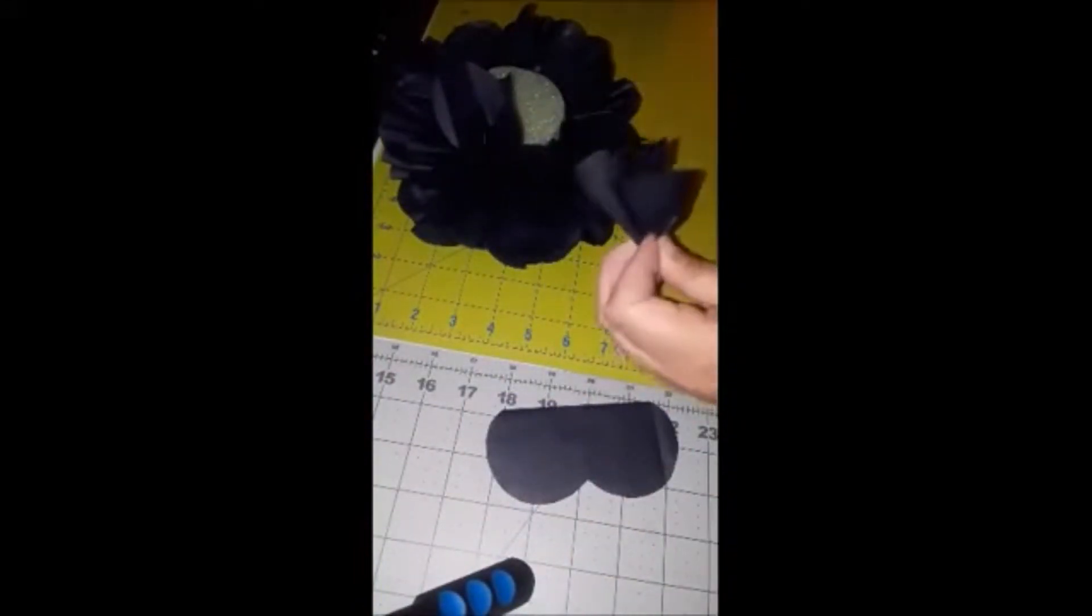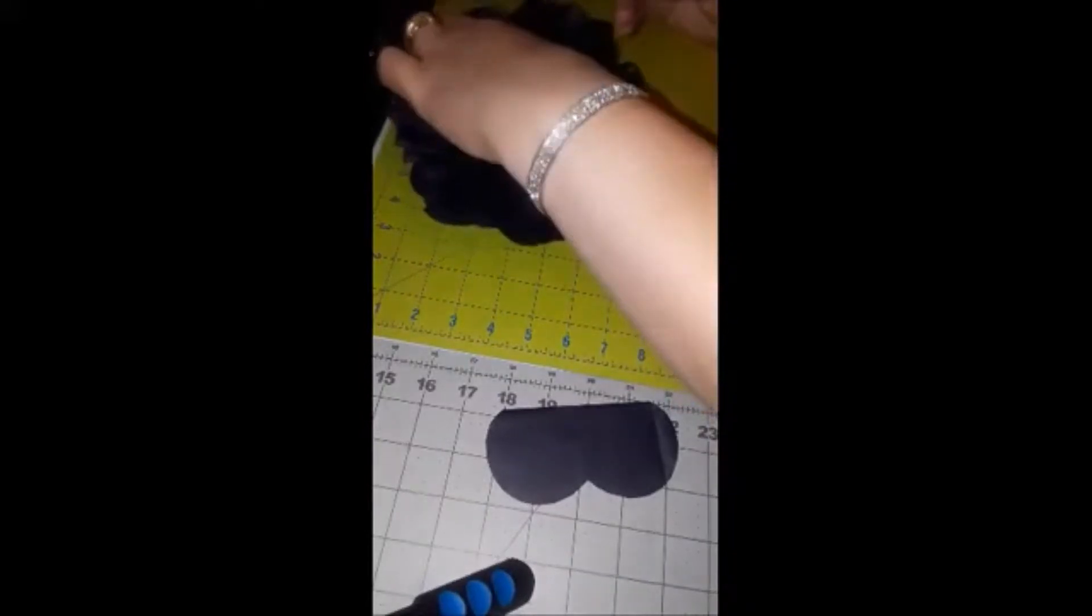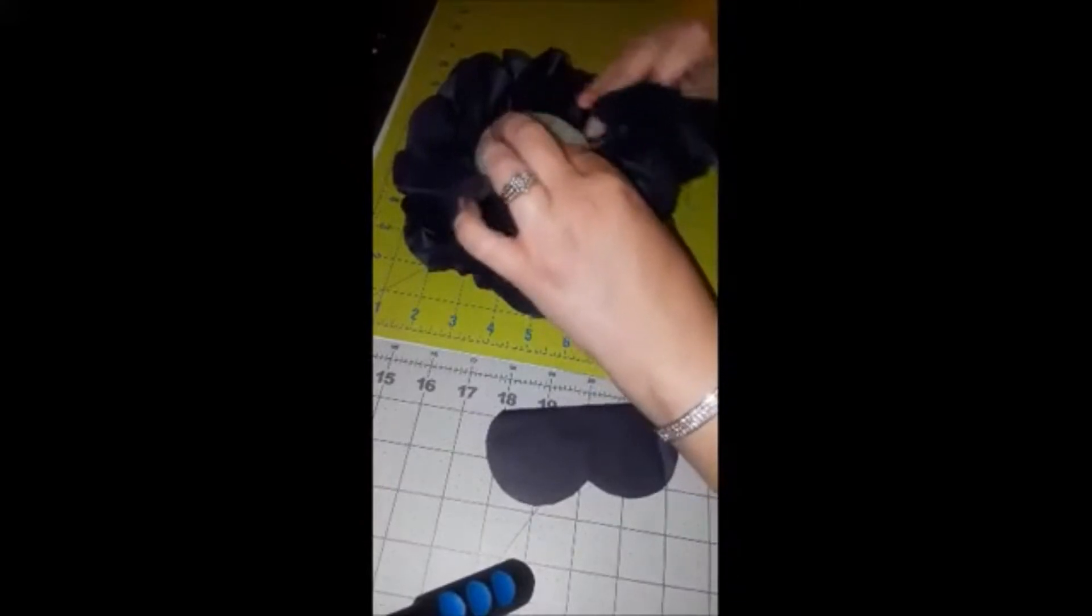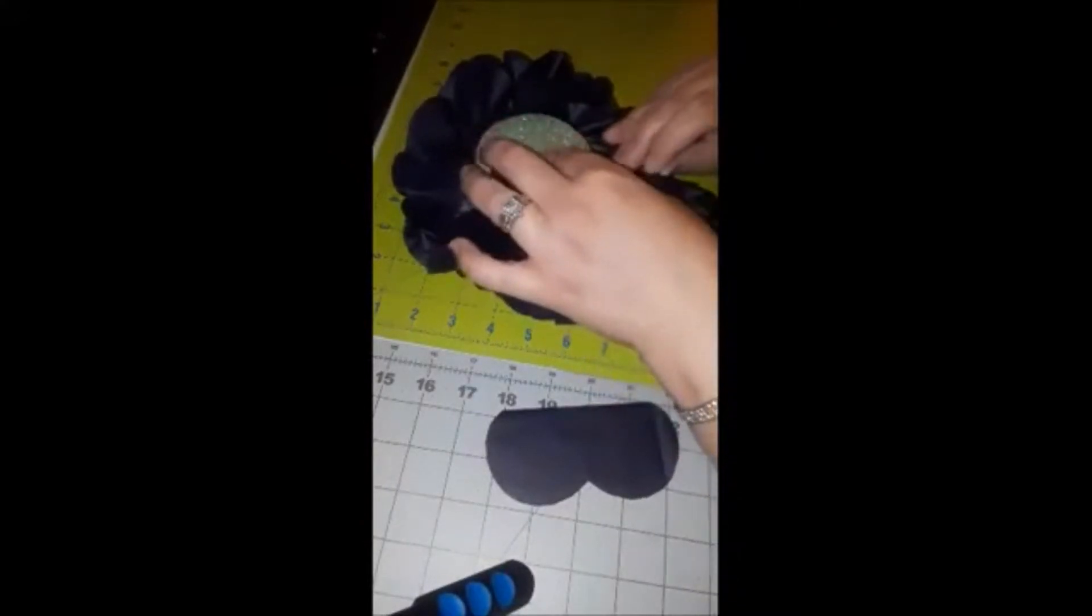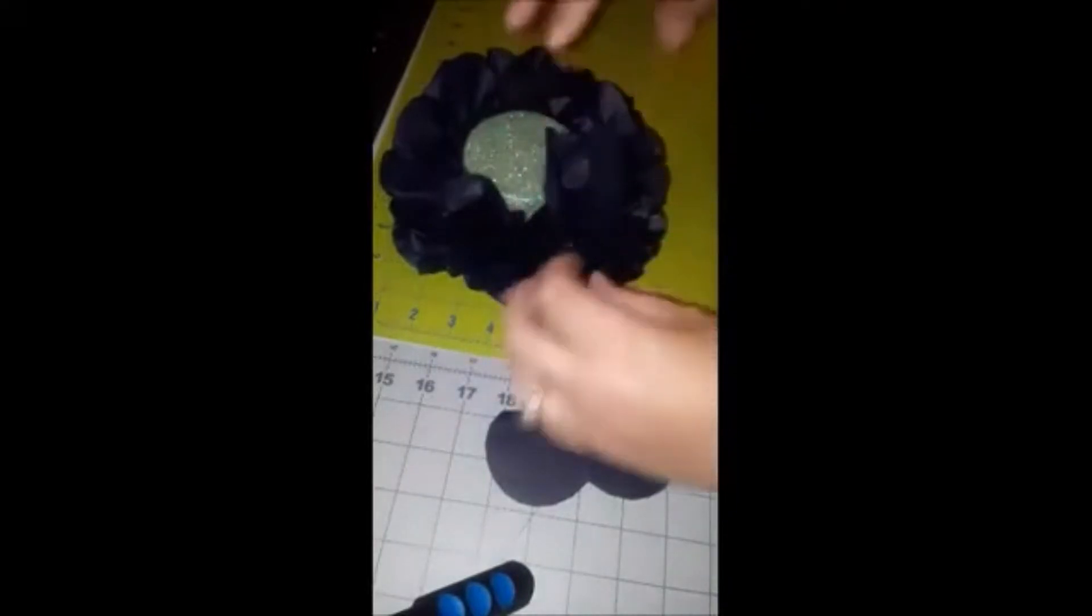Go ahead and start pinning. It's the same thing—you're going to leave that much space around the edge like you did on the bottom row and the middle row. So it's going to start to puff out once it's all together.